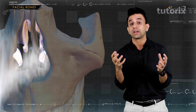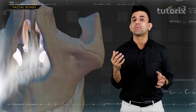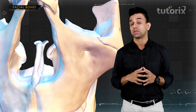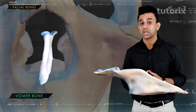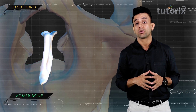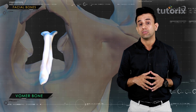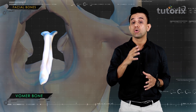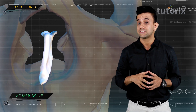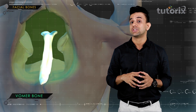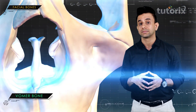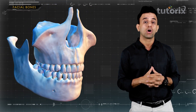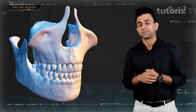The vomer is a solitary, triangular-shaped bone present on the floor of the nasal cavity. The vomer bone forms the inferior portion of the bony nasal septum — the septum which divides the nasal cavity into the right and left sides.